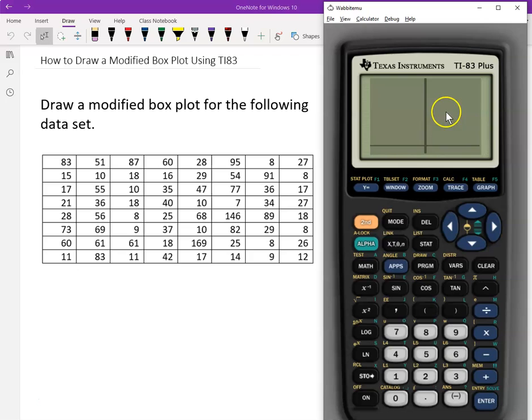Okay, now you cannot see anything. Probably because your window did not set up correctly. You can automatically set up the window. The best way is to use zoom stat. Click zoom and go down to the ninth, zoom stat. And then choose.